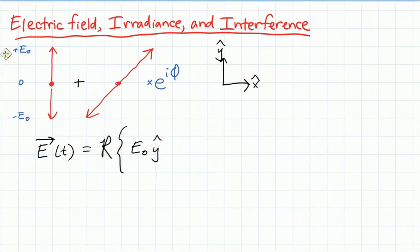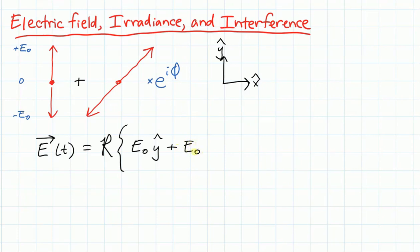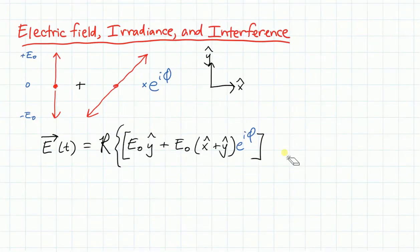My second oscillation is e-naught times both x-hat and y-hat added together, a 45-degree angle. And then that term is multiplied by e to the i phi. And then this entire expression representing the spatial description of these arrows has to get some time dependence, which is what we usually call e to the minus i omega t.